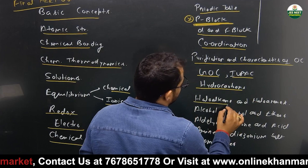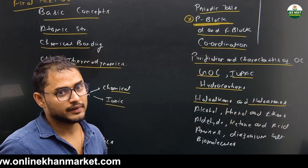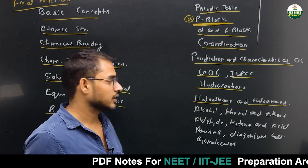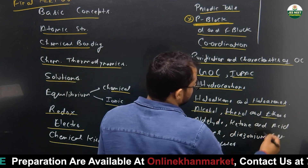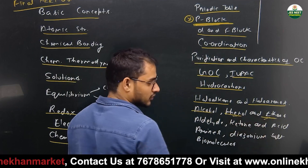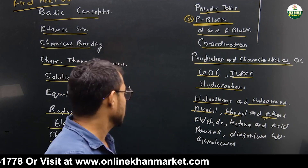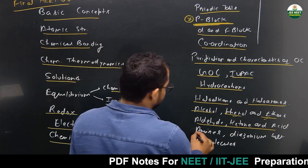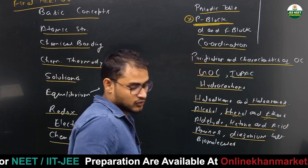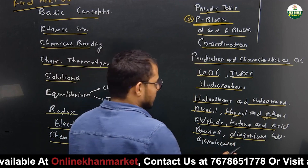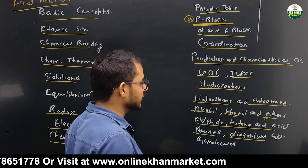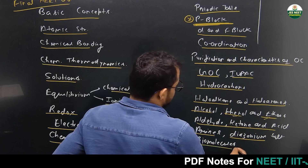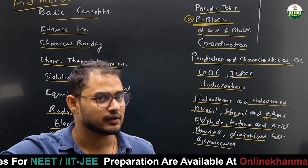Haloalkanes and haloarenes — where the halogen atom is directly attached to an alkyl group or to a phenyl/aryl group — are in your syllabus. Alcohols, phenols, and ethers, including reactions of phenol and reactions of ethers, are in your syllabus. Then aldehydes, ketones, and carboxylic acids (R-CHO, R-CO-R, R-COOH). Amines (R-NH₂) and diazonium salts (C₆H₅N₂⁺Cl⁻) are also covered. Finally, Biomolecules — involving carbohydrates, RNA, and DNA — are included.